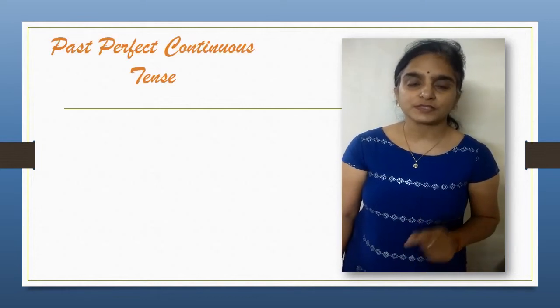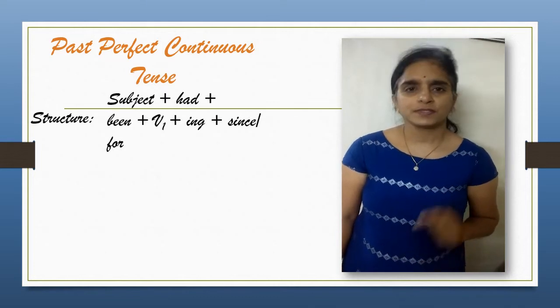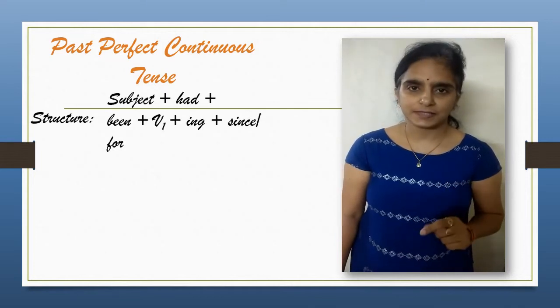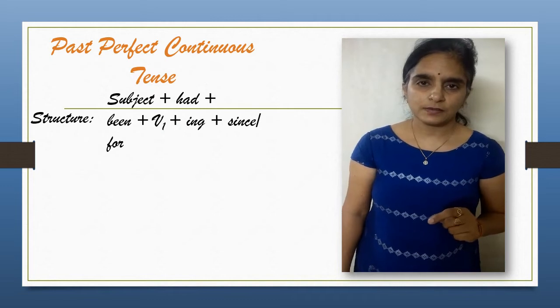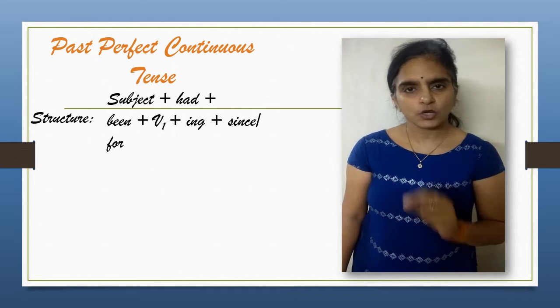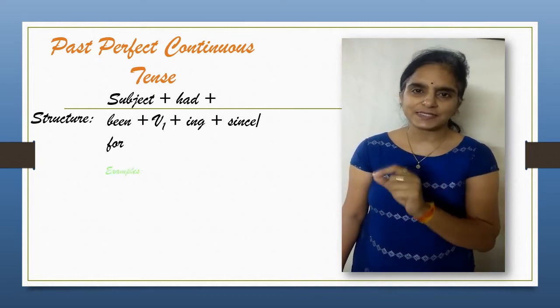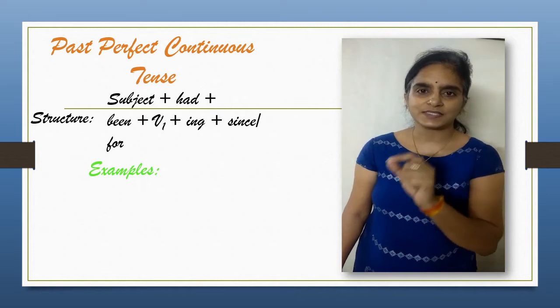Past Perfect Continuous tense. Structure: subject plus had plus been plus first form of verb plus ing plus since or for. Let's move on to the cited examples and see its usage.